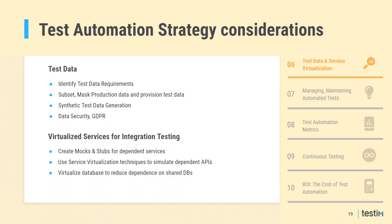Today's applications are no longer monolithic — they rely on various other components with their own SDLC timelines. When your application relies on components that aren't available or are costly, you virtualize those interfaces using what we call service virtualization. This is very similar to mocking and stubbing and can be done for APIs, databases, websites, and more. Tools in this space include CA/Broadcom, Parasoft, Delphix (focused on database virtualization), Tricentis, and others.